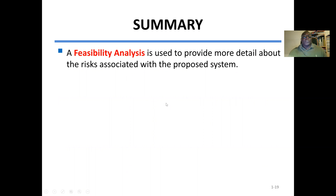In summary, this lecture covered what feasibility analysis is and how to conduct it. It is broken into three parts: technical feasibility, economic feasibility, and organizational feasibility. Technical feasibility deals with the technology — if it is new, the chance of failure is high; if it is established, the chance of success is high. Economic feasibility covers the cost and benefit of the system. We wish everybody the best — thank you.